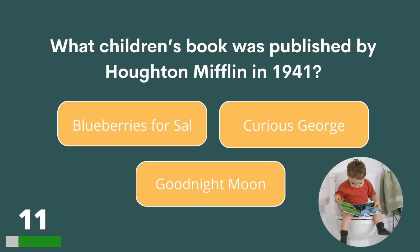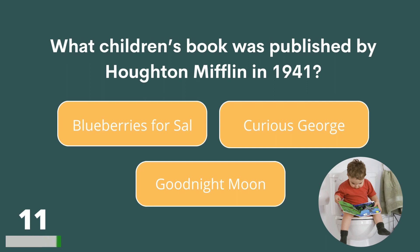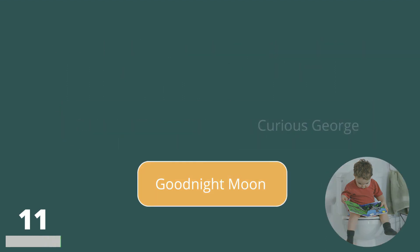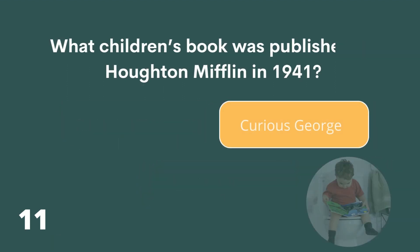What children's book was published by Houghton Mifflin in 1941? Blueberries for Sal, Curious George or Goodnight Moon? The answer is Curious George.